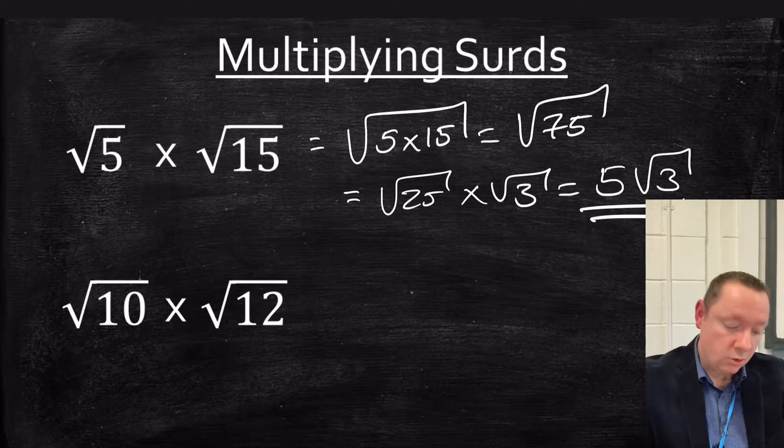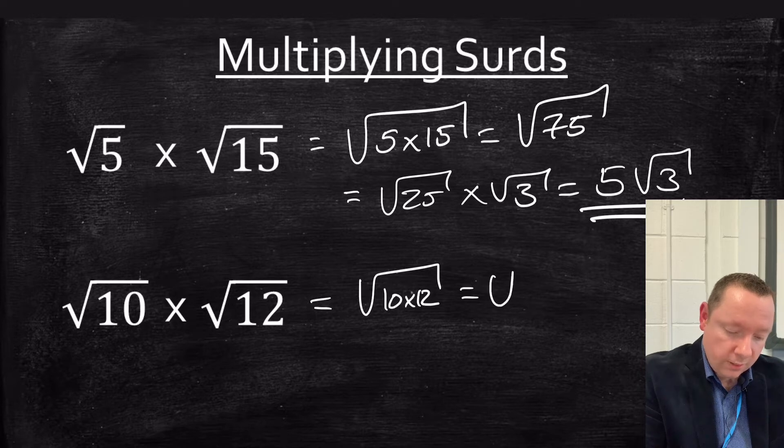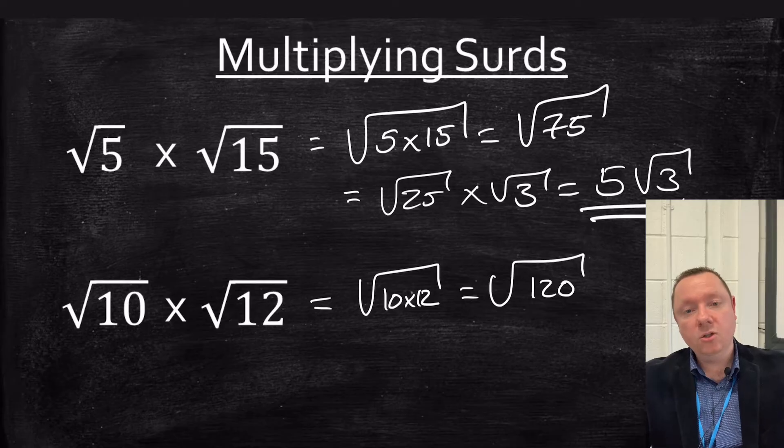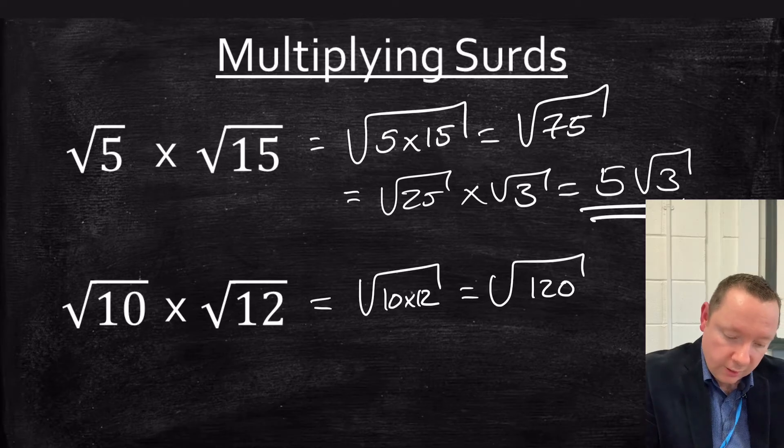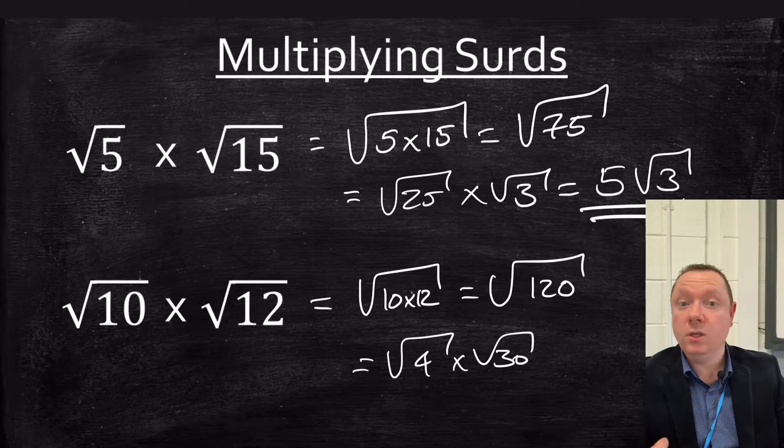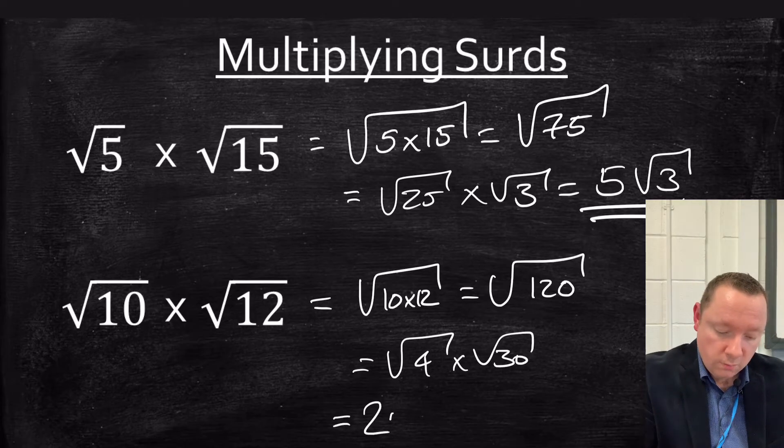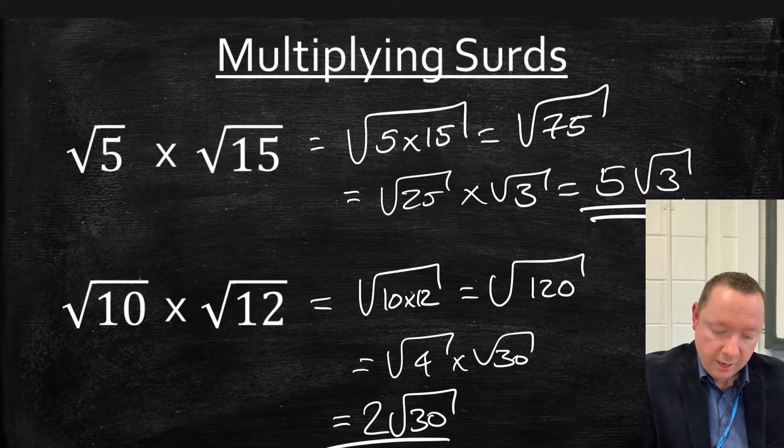Let's try another one. The square root of 10 times 12. So that's the square root of 10 times 12, that's 120. You're looking for a square number that goes into 120. 4 is the only square number that goes into 120. So I can write that as the square root of 4 times the square root of 30. Since 4 is the biggest one that goes in I know that root 30 is simplified already. The square root of 4 is 2. So we've got 2 root 30 and we're done.